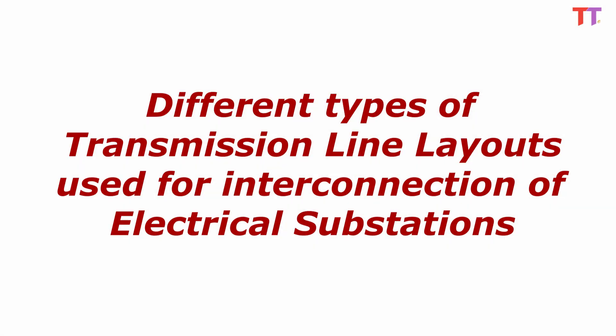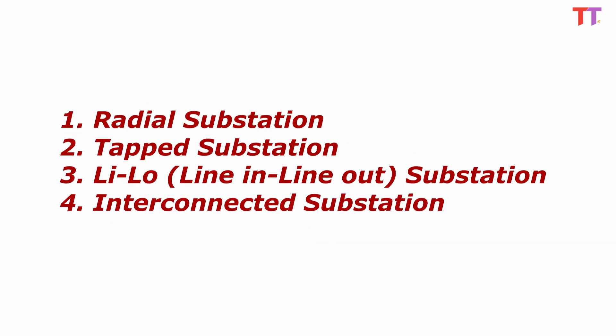Today we will see different types of transmission line layouts used for interconnection of electrical substations. Some commonly used layouts are: radial substation, tapped substation, LILO (line in line out) substation, and interconnected substation.